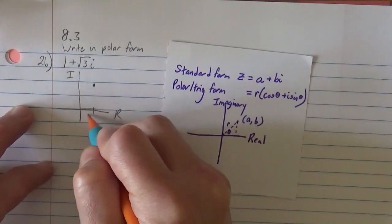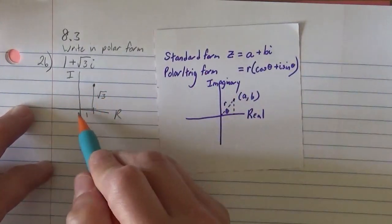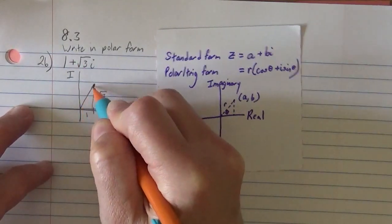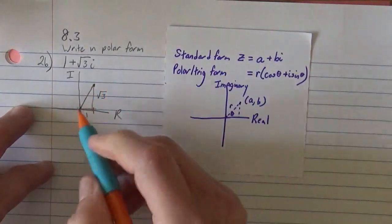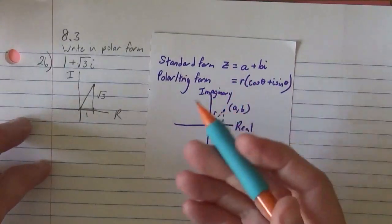We went 1 over and root 3 up. Instead of describing that as like 1 over and root 3 up, we could describe this with a radius from the origin and a length. It's super analogous to the vectors that we were doing earlier.